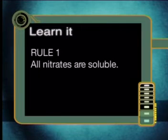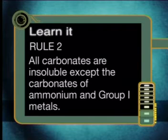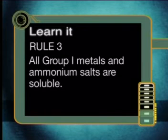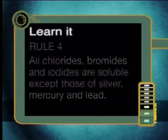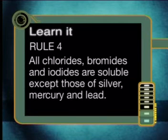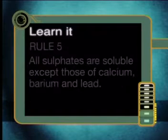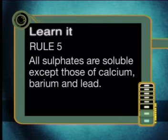Do you recall the solubility rules from our previous lesson? Let's refresh our memories. Rule number one: all nitrates are soluble. Rule number two: all carbonates are insoluble, except carbonates of group one metals and ammonium. Rule three: all group one metals and ammonium salts are soluble. Rule four: all chlorides, bromides and iodides are soluble, except those of silver, mercury and lead. Rule five: all sulfates are soluble, except those of calcium, barium and lead.